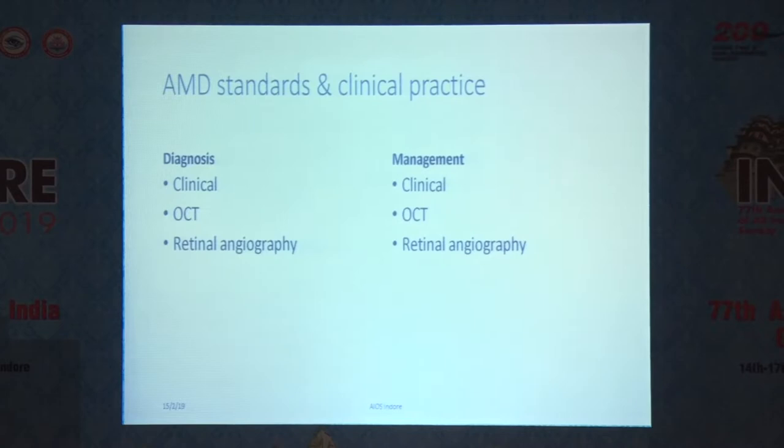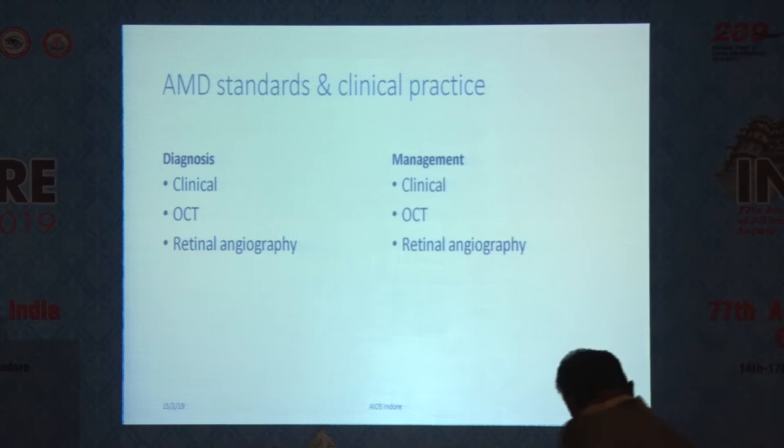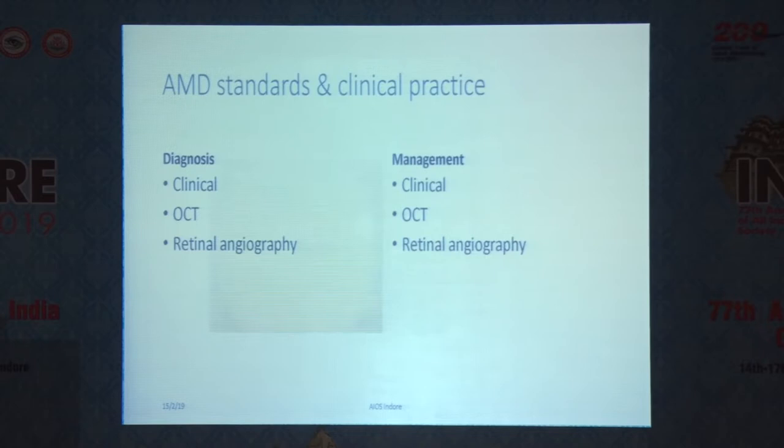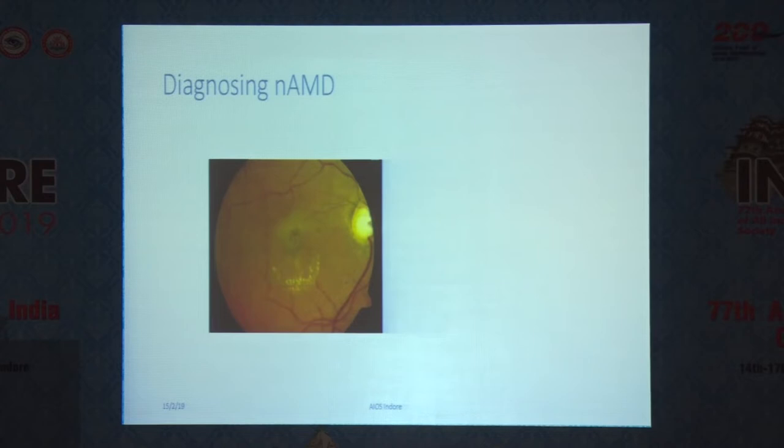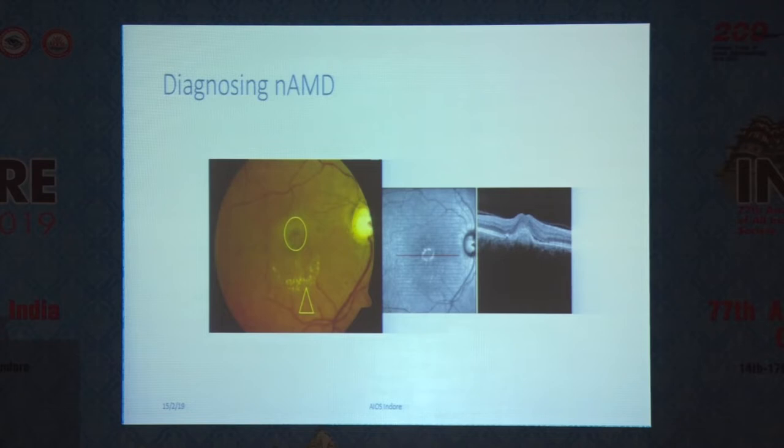I'm sure we all use the clinical assessment of the patient first, helped by the OCT and often with retinal angiography, both at diagnosis of macular degeneration at the outset as well as when we're considering further management of the patient as we go along with the treatment. So when you look at the patient in clinic, you look for the signs of wet macular degeneration in particular — the hemorrhages, the exudates, swelling in the retina. And if you do the OCT scan, you look for certain features such as intra- or subretinal fluid.